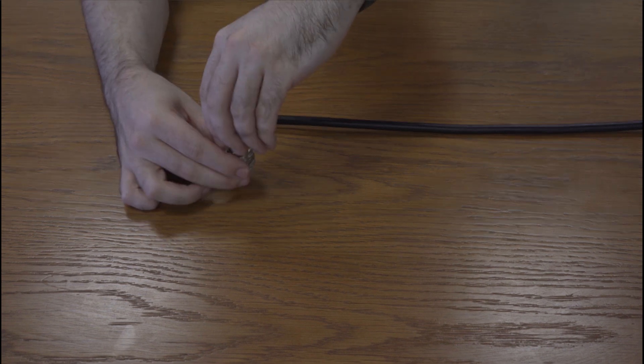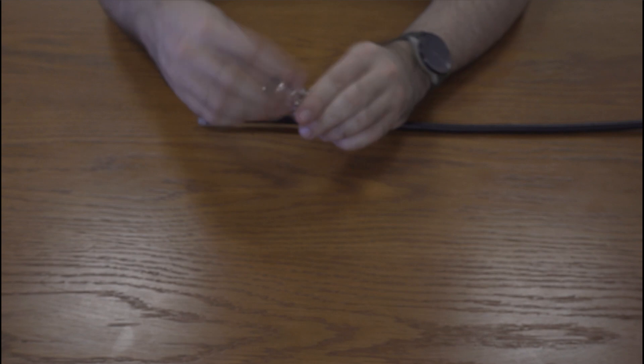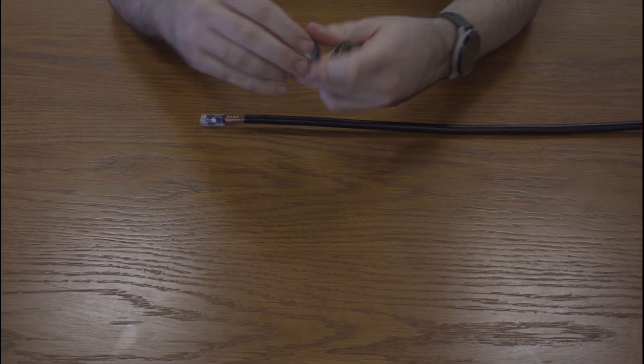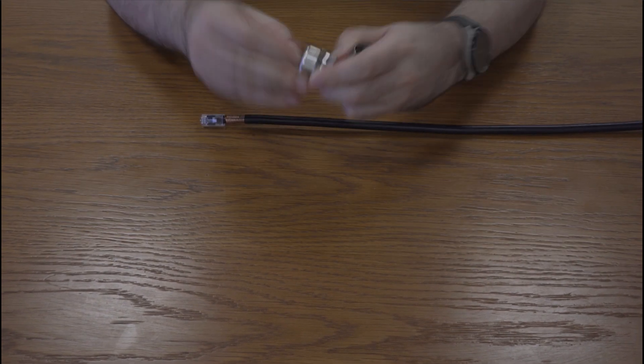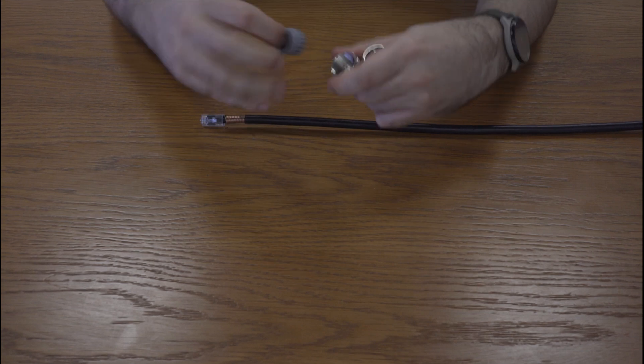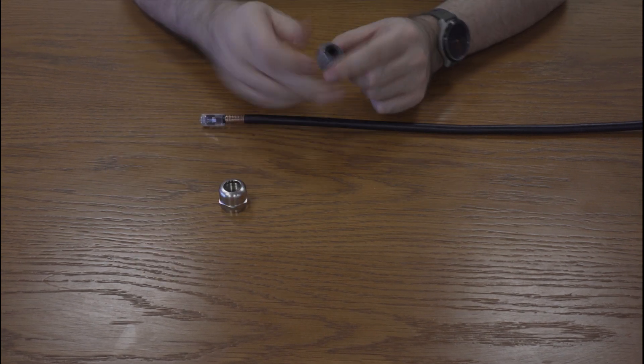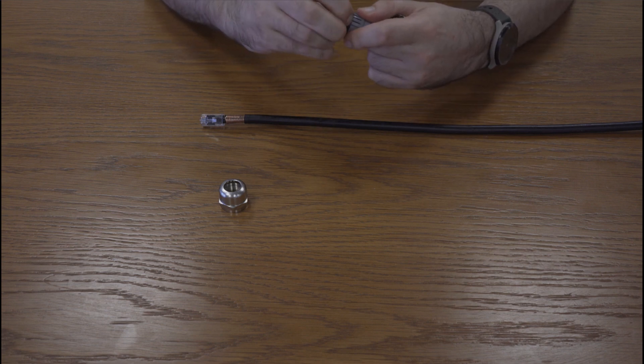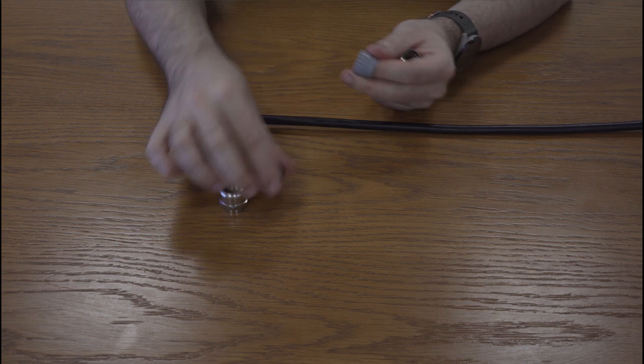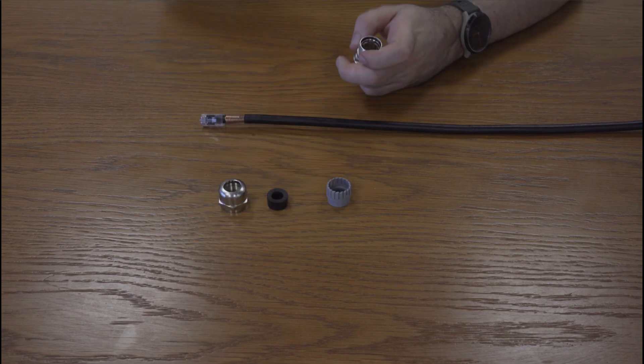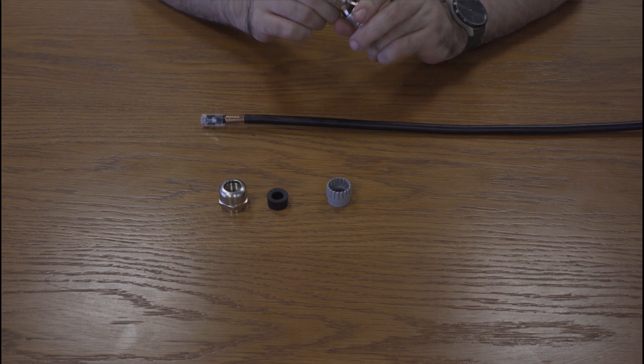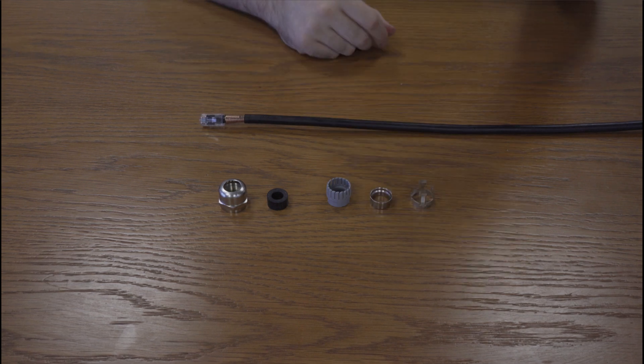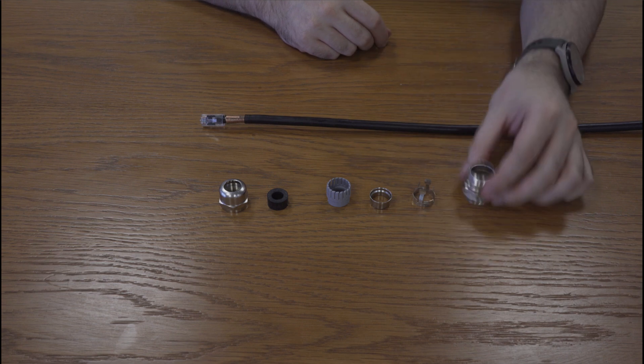First we need to attach the EMC gland to the LPU drop cable. In order to do this you will need to disassemble the EMC gland into its component parts, where you will have the cap, a rubber insert, a plastic collar, a metal ring, a rubber insert, a plastic collar, a metal piece that looks like this, and the base.